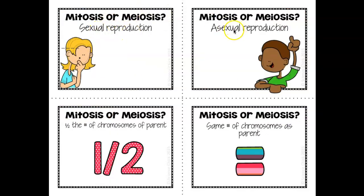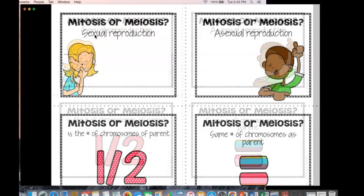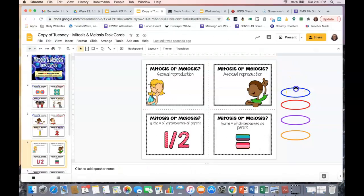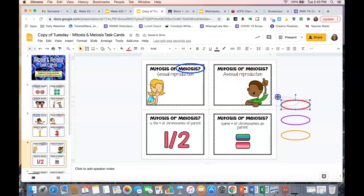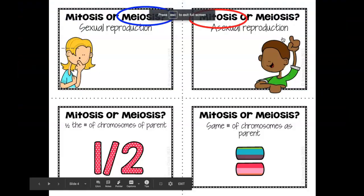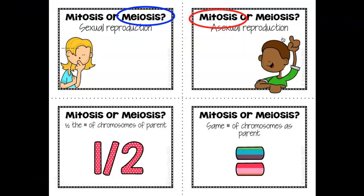Sexual reproduction or asexual reproduction — which process helps with each? You know that meiosis makes egg and sperm, which are needed for sexual reproduction, so that one has to be meiosis. Mitosis takes place in your body cells and supports asexual reproduction. For example, if you have a skin cell that's damaged, your skin automatically replicates itself — it just copies itself — and that's a form of mitosis because your skin cells are body cells.